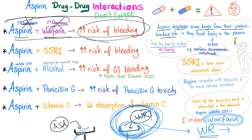Aspirin plus selective serotonin reuptake inhibitors — the famous antidepressants. When you use them together, you increase the risk of bleeding, because there is evidence that SSRIs have some anti-platelet effect. Anti-platelet plus anti-platelet is not good for platelets — you will bleed, and platelets will not come to the rescue.